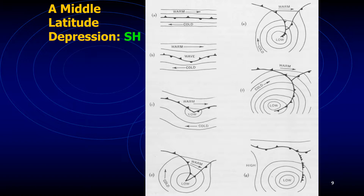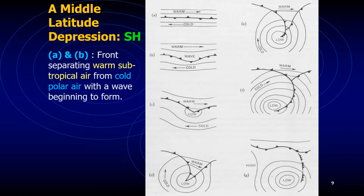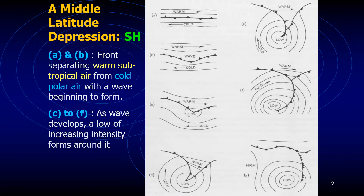Sometimes an upper-level pool of cold air that has broken away from the main flow lies above or almost directly above the surface low. Occasionally the upper low will break away entirely from the main flow, producing a cutoff low, which often appears as a single contour line on an upper-level chart. In the diagrams showing southern hemisphere formation, figures A and B show the front separating warm subtropical air from cold polar air with a wave beginning to form. From C to F, as the wave develops, a low of increasing intensity forms, and over approximately seven days the front turns into an occluded front and gradually weakens.